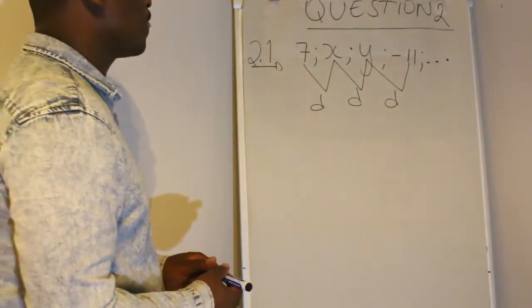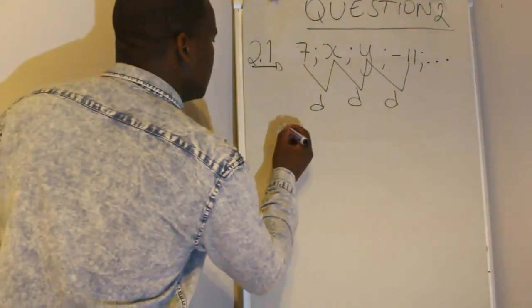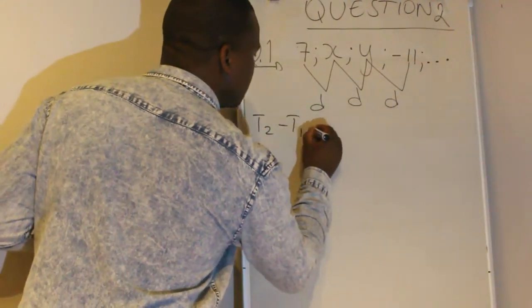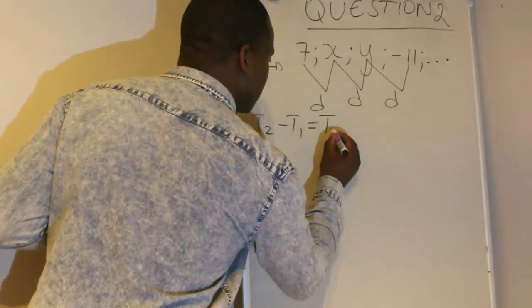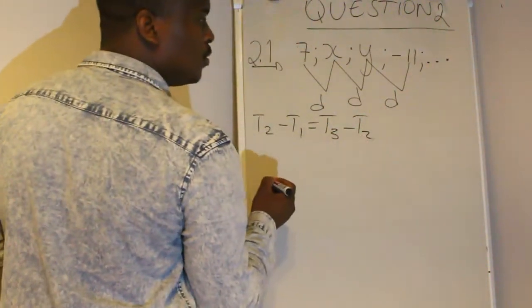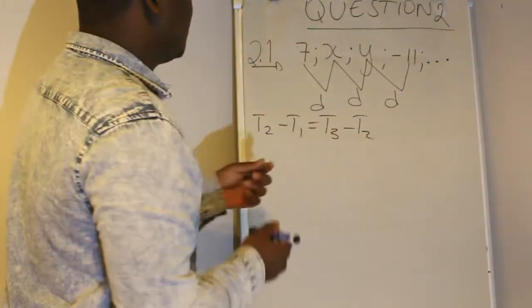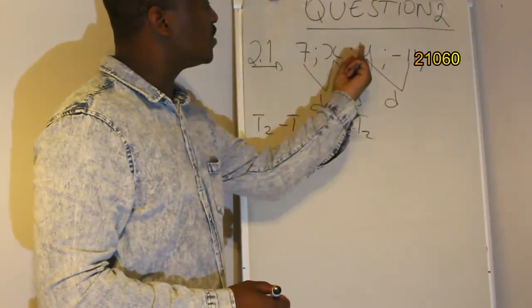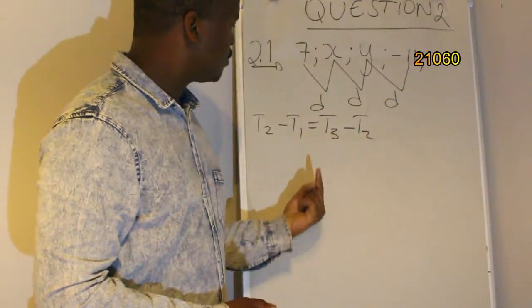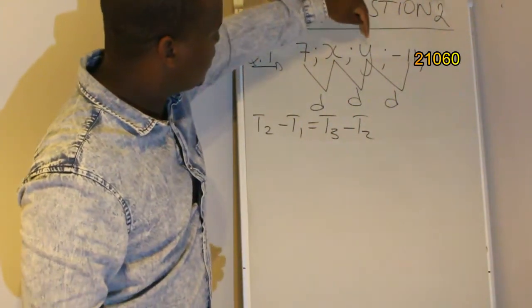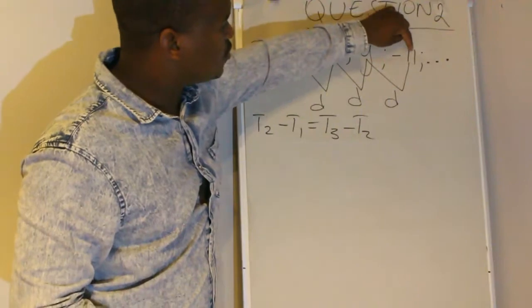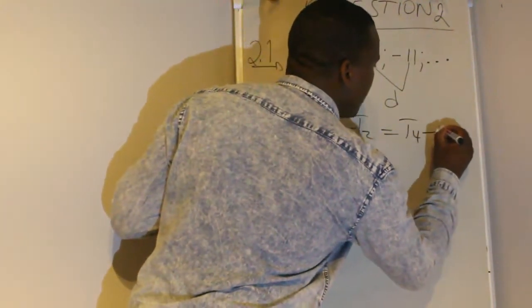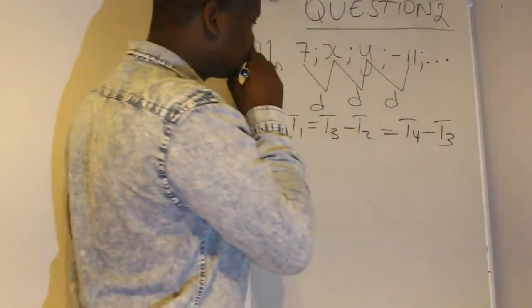So if you find the difference between all these terms — x minus 7, y minus x, negative 11 minus y — it's all going to give you the same common difference. So what you do is say: term 2 minus term 1 is equal to term 3 minus term 2, which is equal to term 4 minus term 3. Because this is term 1, term 2, term 3, and term 4.